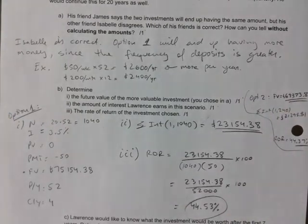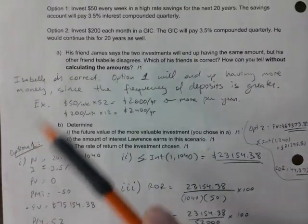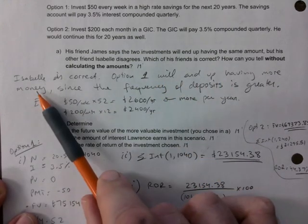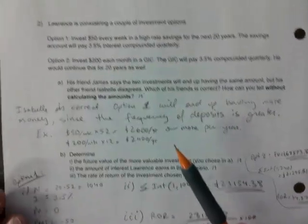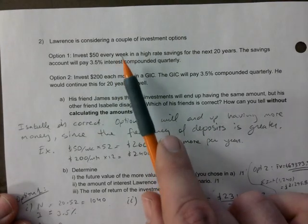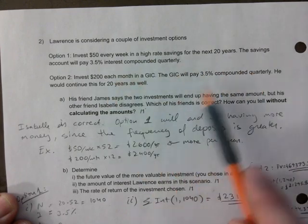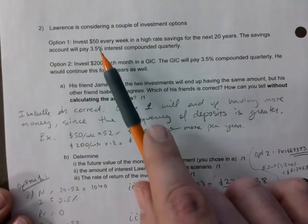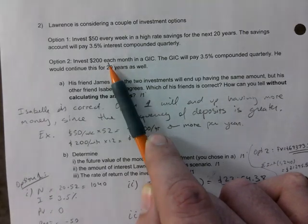It's important to me that you learn to put a mark down. So, in this case, Isabel is correct. She disagrees. Option one will end up having more money since the frequency of deposits is greater. So, when you have everything being the same, you kind of want to look at frequency. If this had been compounded quarterly and this one monthly, and everything else is kind of the same, then monthly wins. In this case, it seems everything is the same, but $50 weekly is better than $200 monthly. We often think that, oh, there's four weeks in a month. It's the same. But think of the whole year.